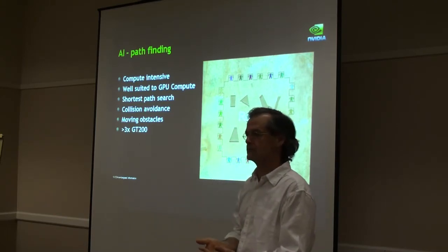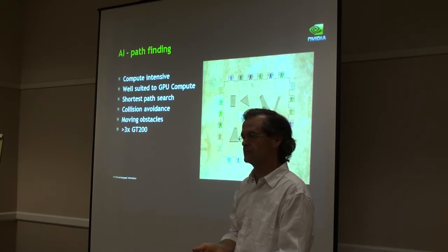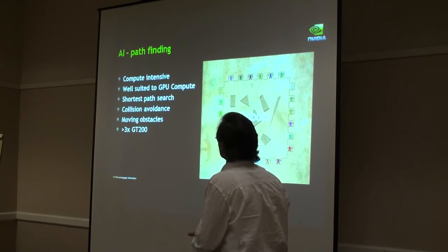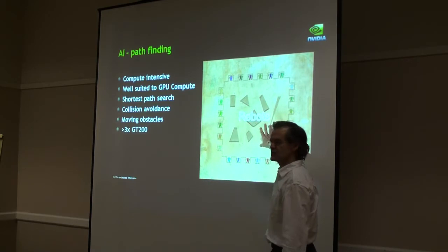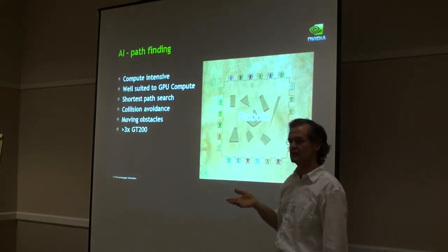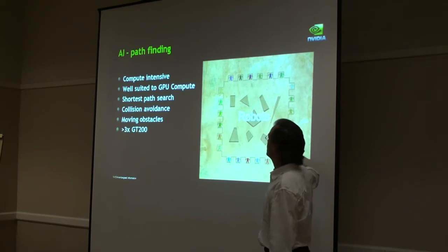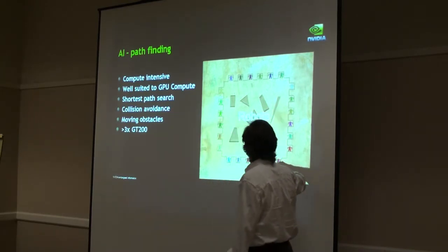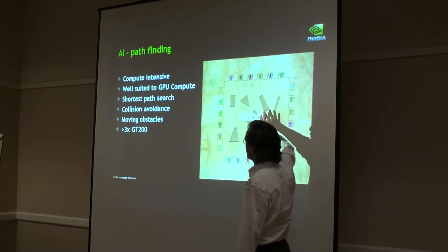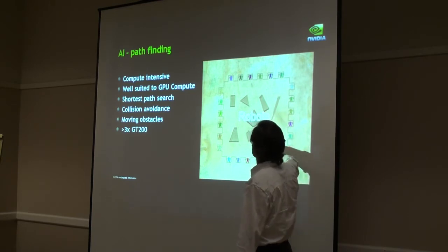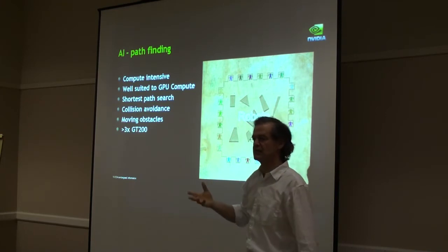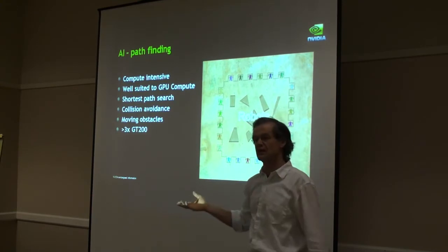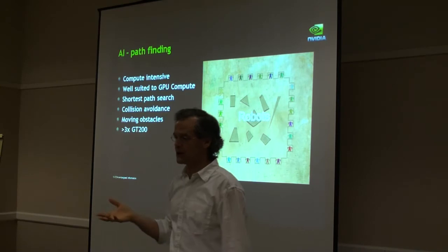Essentially all games have some form of pathfinding AI - they have to figure out how to navigate. Finding a general solution to this, particularly with very large numbers of synthetic characters, is very compute-intensive. It turns out it's also extremely highly parallel, so it's very well suited to the GPU. It's basically finding a shortest-path search through the environment based on various constraints - both static constraints like objects sitting there, hallways, and doors, but also dynamic constraints where there are other characters, whether synthetic or actual other players in the game.